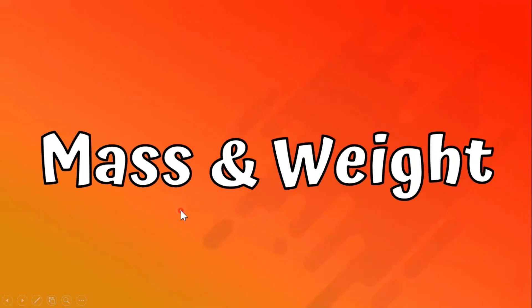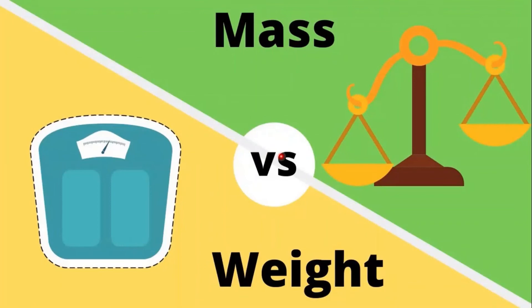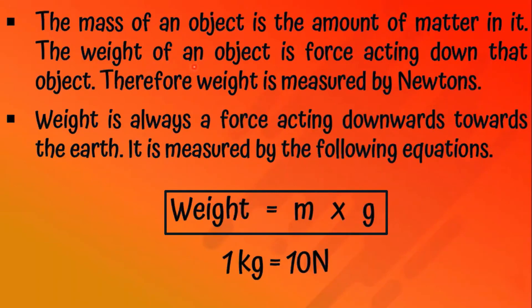Mass and Weight. The mass of an object is the amount of matter in it. The weight of an object is the force acting downward on that object. Weight is measured in newtons; mass is measured in kilograms. Weight equals mass into gravitational acceleration. The normal gravitational acceleration on Earth is 10 m·s⁻². Remember: 1 kilogram is equal to 10 newtons.